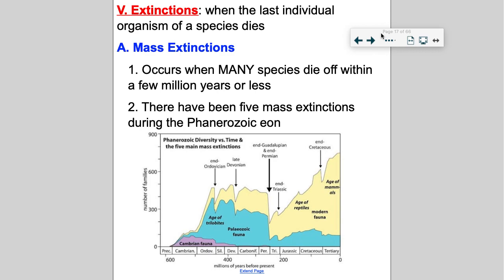The end-Cretaceous extinction is the one that wiped out the dinosaurs. They believe an asteroid or a comet struck Earth off the coast of Mexico at the Yucatan Peninsula. It spewed out a lot of debris into the air that blocked out sunlight for weeks or months. Plants died, then the plant-eating dinosaurs died, then the carnivores ran out of food to eat. It's kind of like a chain reaction.